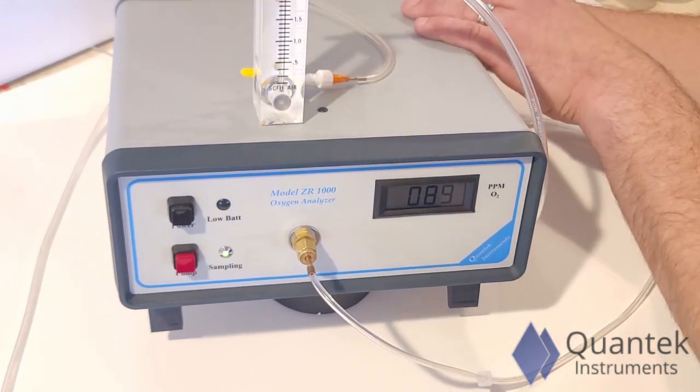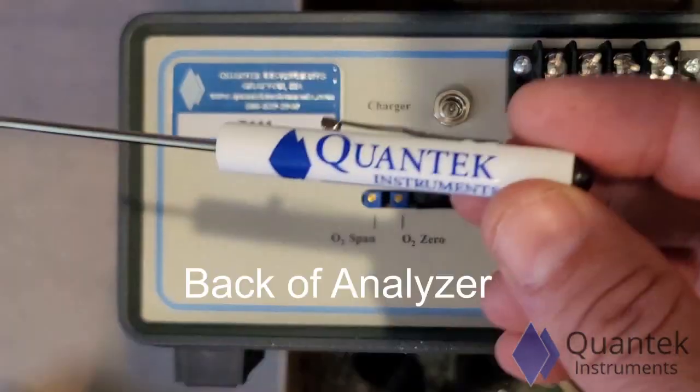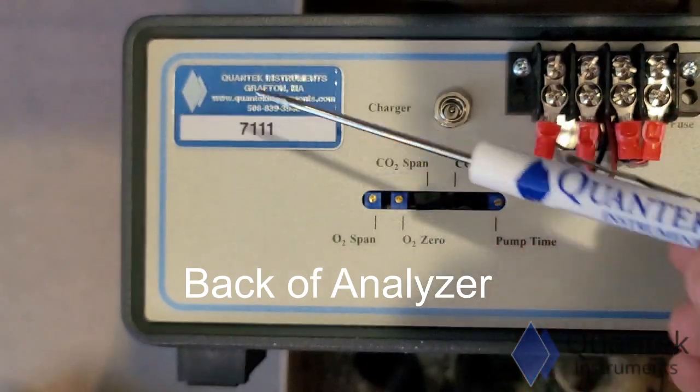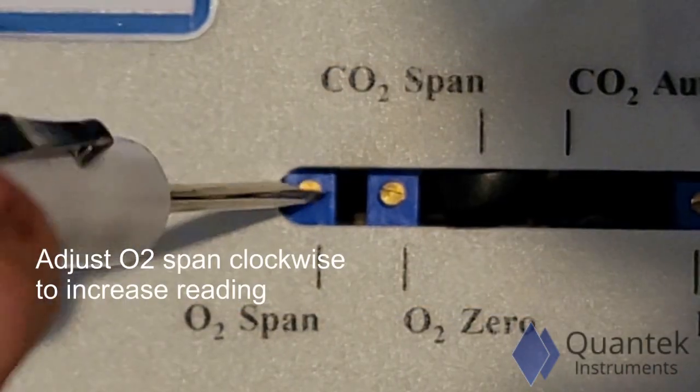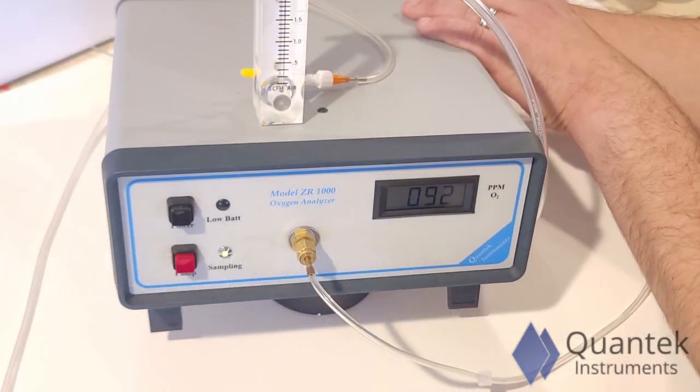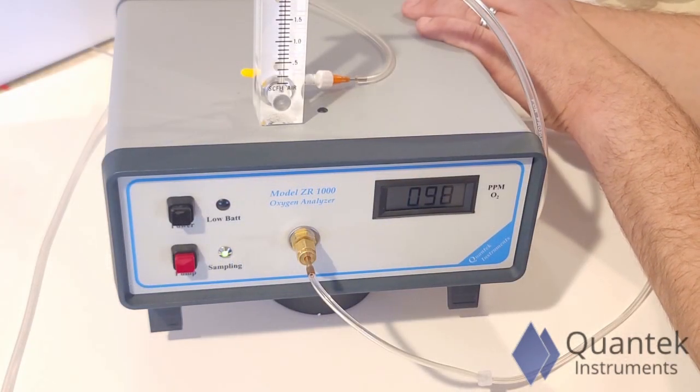Activate the pump. The reading is a little low, so we'll adjust the O2 span clockwise so that the instrument reads 100 ppm. Our calibration is complete.